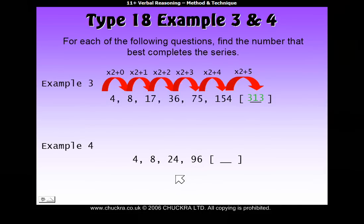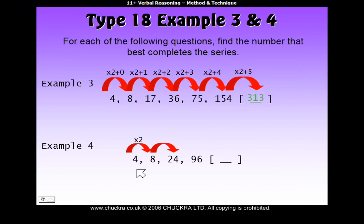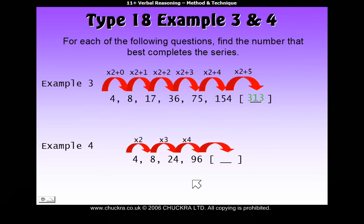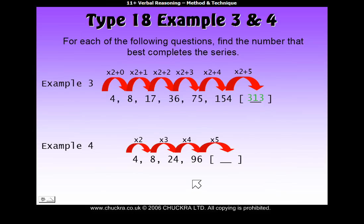So if you notice there, we had a pattern. So we were timesing by 2, to begin with, then timesing by 3, then timesing by 4. So to get our answer, we need to times 96 by 5. And 96 times 5 is 480.